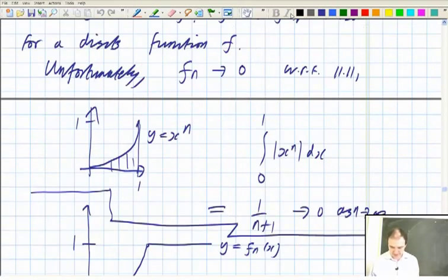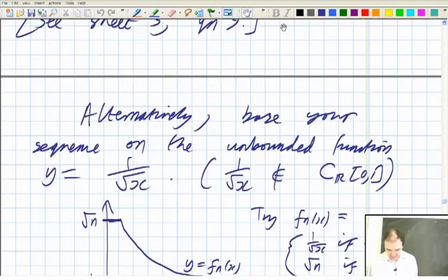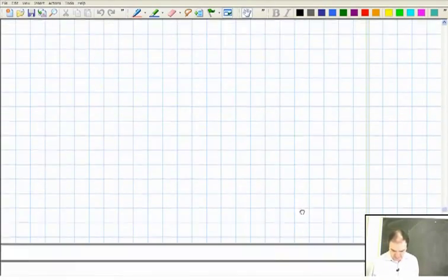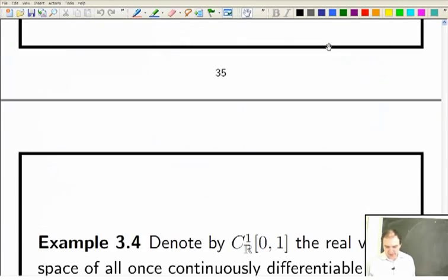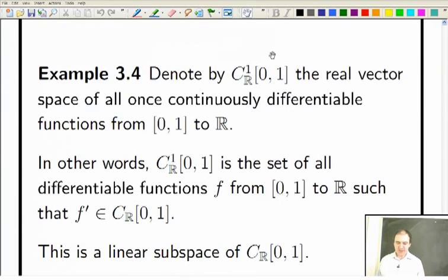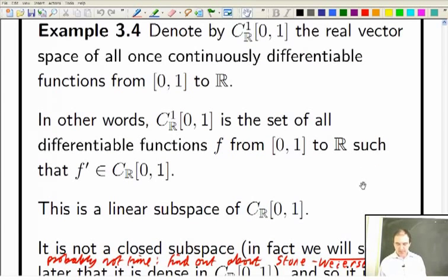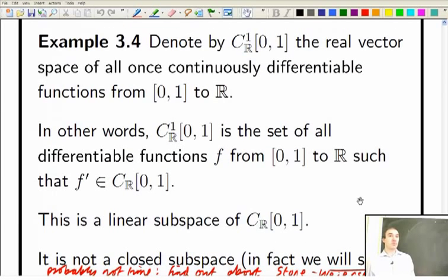Or if not, then we were looking at the once-continuously differentiable functions, and I'm pointing out that if you try to use the uniform norm on the once-continuously differentiable functions, so that's continuous functions which are differentiable and whose derivative is continuous.